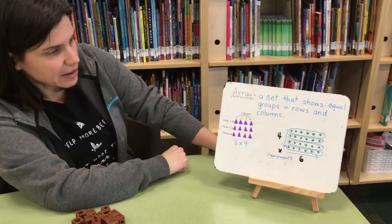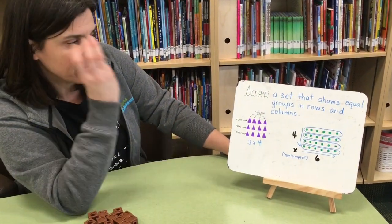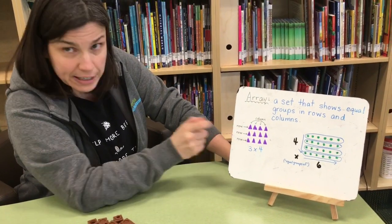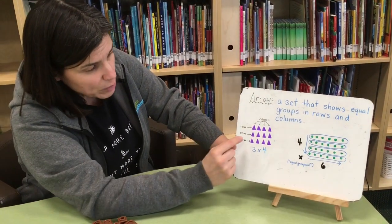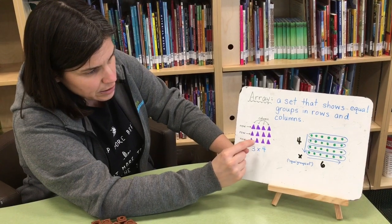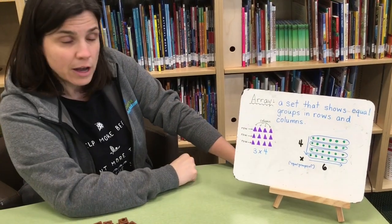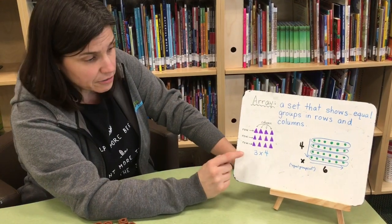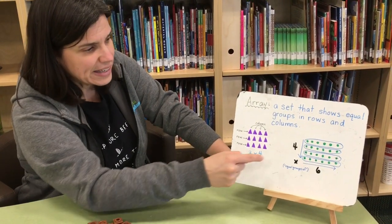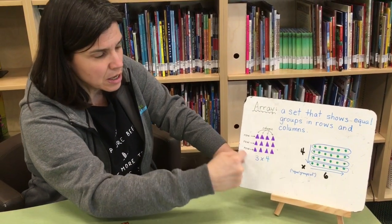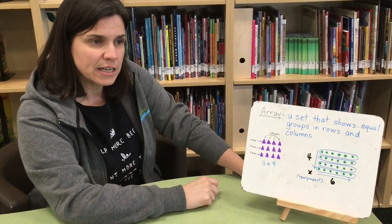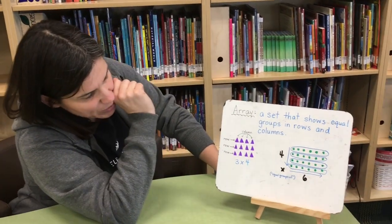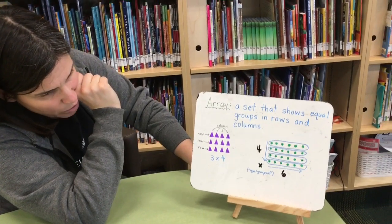If you look at this diagram that Ashley drew for us, you can see we have three rows — one, two, three — and in each row we have one, two, three, four. So this array is actually representing the multiplication sentence of three times four. We can count the total number of triangles to figure out the answer for three times four.